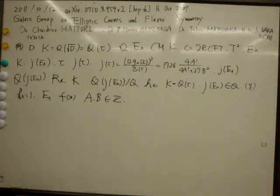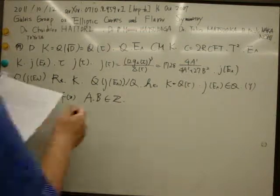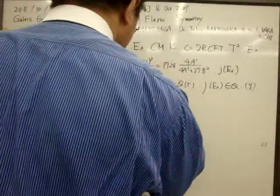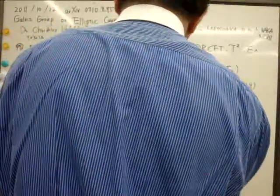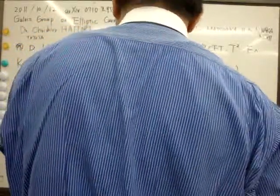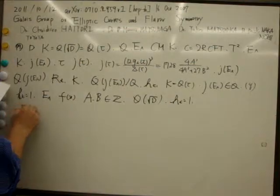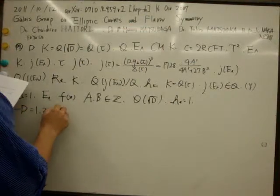Identically, it is known that there are only nine quantum imaginary fields. This is the case of minus D equals one, two, three, seven.